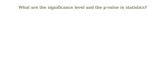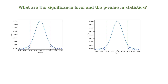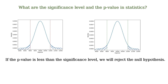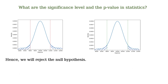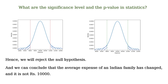At this point we compare the p-value with the significance level. If the p-value is less than the significance level, we reject the null hypothesis. In our case, the p-value is 0.046 and the significance level is 0.05. Since the p-value is less than the significance level, we reject the null hypothesis and conclude that the average expense of an Indian family has changed and is not Rs 10,000.